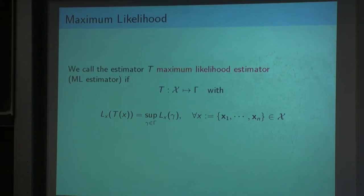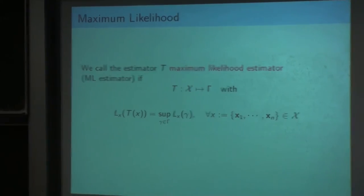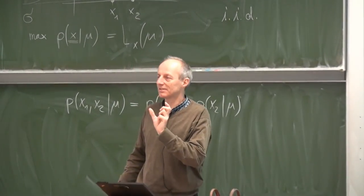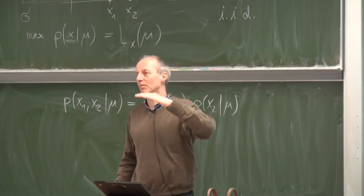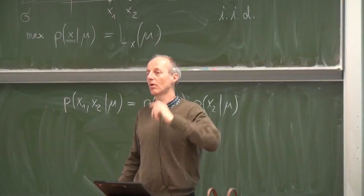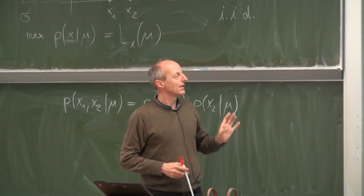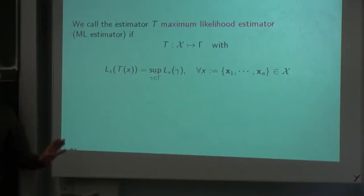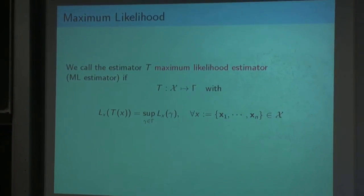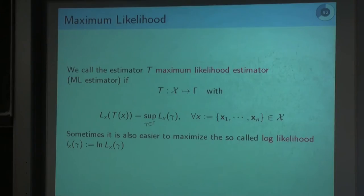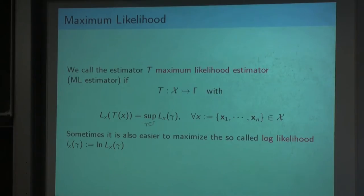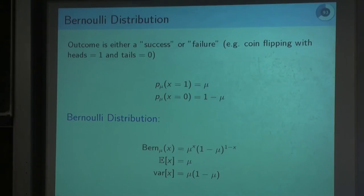What we do is look for the supremum over the parameters of the likelihood function. The supremum is the least upper bound — for finite sets it equals the maximum. We can also maximize the log-likelihood, which leads to the same result. Let's look at another example.